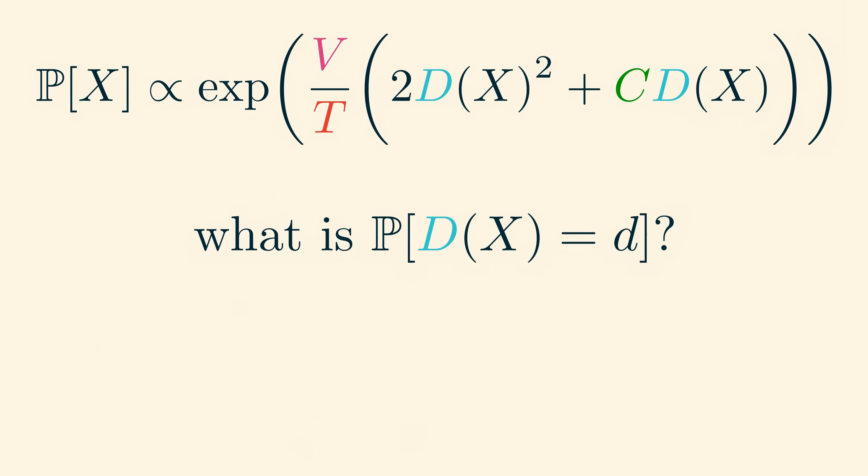So what is the probability that we see a particular density? In other words, for some fixed number little d between 0 and 1, what's the probability that our random density big d of x equals little d? Well, for each microstate with density little d, the probability of that particular microstate is proportional to the exponential of v over t times 2d squared plus cd. But we also need to know how many microstates have density d.